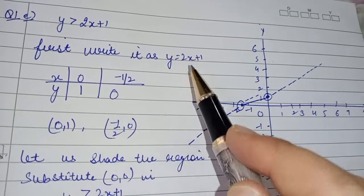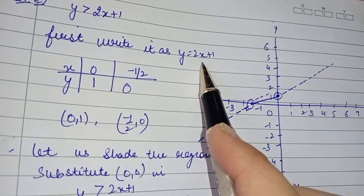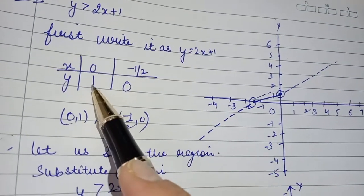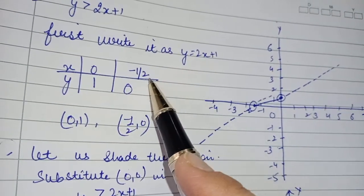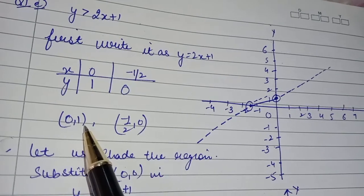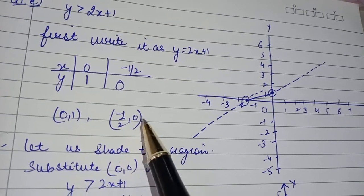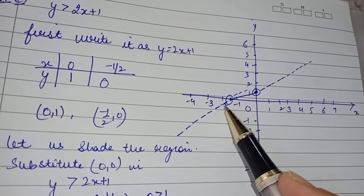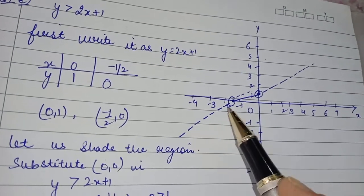We need two coordinates to draw the graph. Put x equal to 0 in this equation, so y will be equal to 1. Similarly, if I put y equal to 0, then x will be minus 1 by 2. So my two coordinates are (0, 1) and (−1/2, 0). Join them indefinitely and we will get the line.